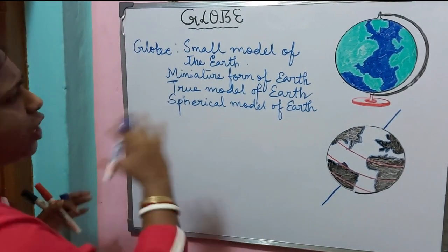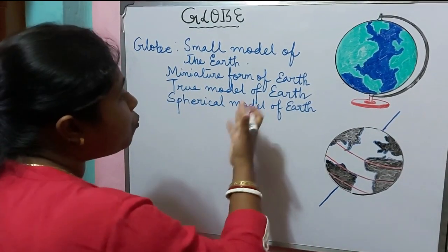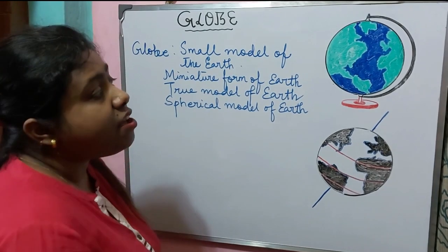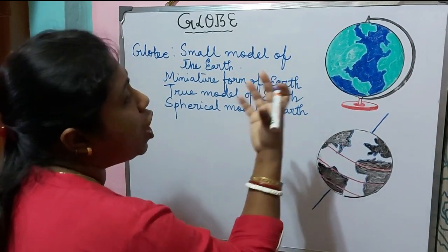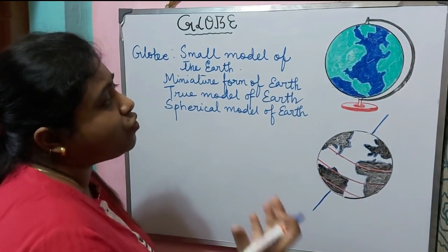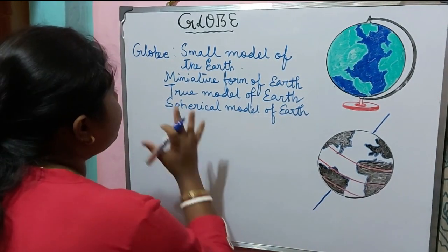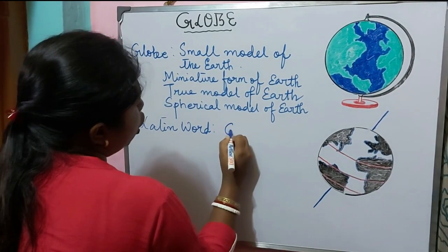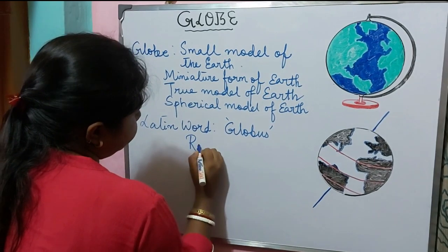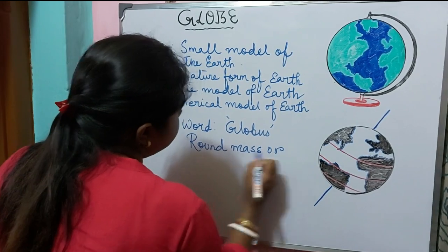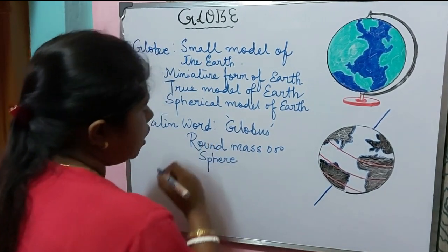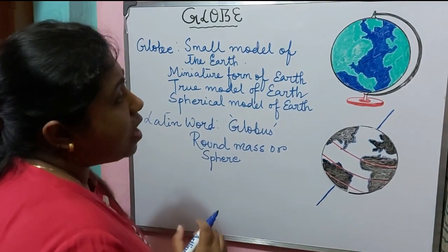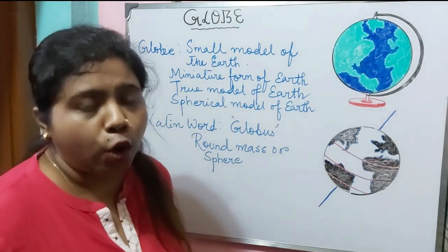A globe can be defined as a small model of the Earth, miniature form of the Earth, true model of the Earth, or spherical model of the Earth — which exactly shows the shape of the Earth. It is very helpful to locate different places, to identify oceans and continents, and to know about the shape and size of different physical features on Earth's surface. The word 'globe' came from a Latin word 'globus', which means round mass or sphere.